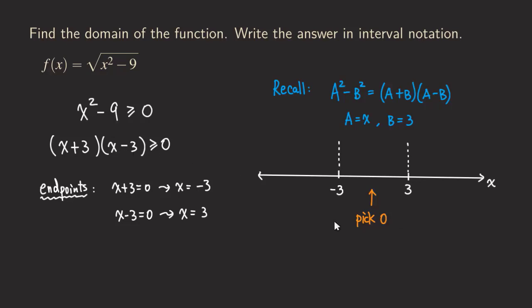So pick the zero in here, you get zero squared minus nine. So you are going to get a negative number.